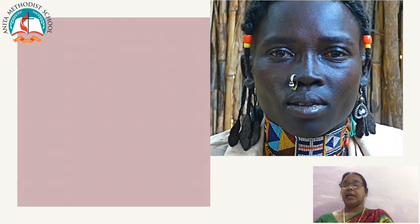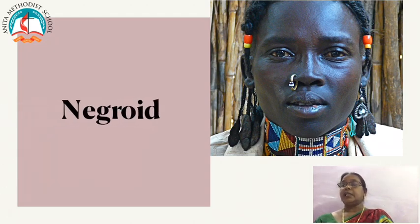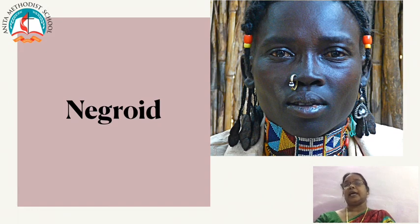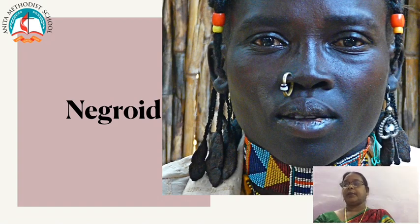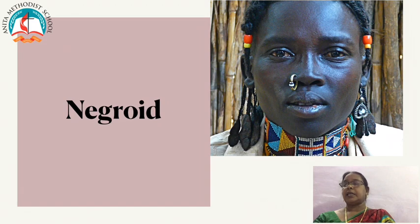Next is the Negroid race. Negroids have dark eyes, dark skin, black woolly hair in curls, a wide nose, a long head, and thick lips. They live in different parts of Africa and are the descendants of the people of Sub-Saharan Africa.